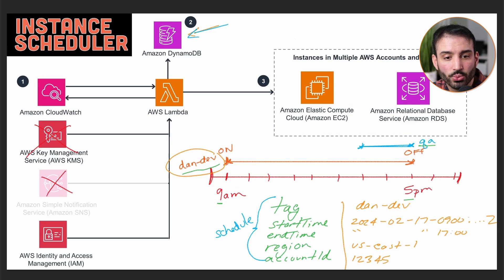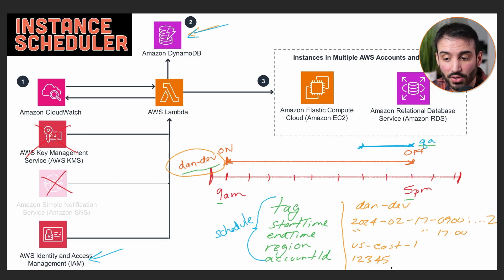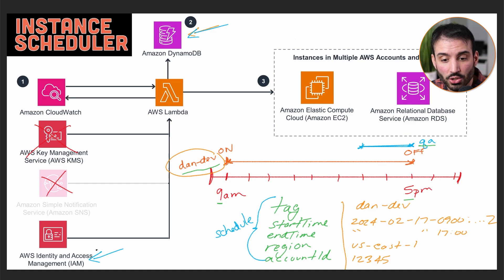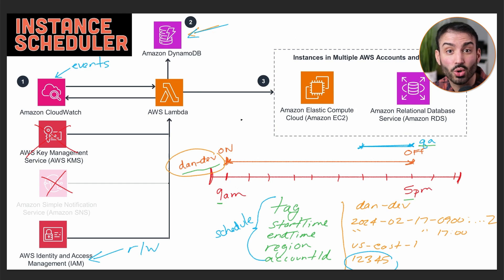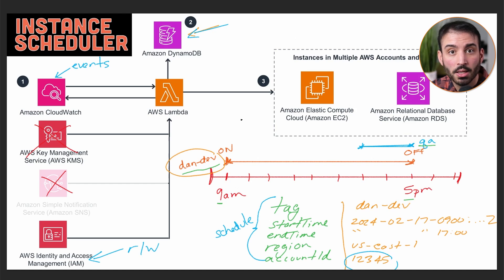Now, how does this actually work? We start with some initial setup: schedules are pre-configured and stored in DynamoDB. We also have IAM roles set up for cross-account access, so the Lambda can interact with EC2 and RDS across different account IDs stored in the table. Then it all starts with Amazon CloudWatch Events, which work similarly to cron jobs on a Unix machine, allowing you to fire events at specific times or intervals.